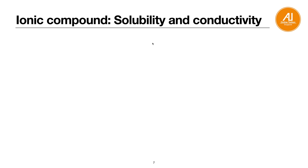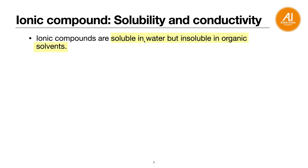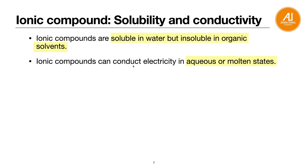What about the solubility and conductivity of ionic compounds? Ionic compounds are soluble in water but insoluble in organic solvents — organic solvent basically means oil or alcohol. For conductivity, they can conduct in aqueous or molten state only. In solid state, they cannot conduct. This is very important — questions often ask which states allow conduction and which don't.